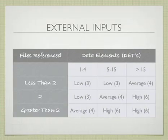All the transactions, actually all the components, have a similar table to this. The transactions are based upon the number of data elements and the number of file types referenced. In this case, an external input with one to four data elements and less than two file types referenced would be rated as a low.